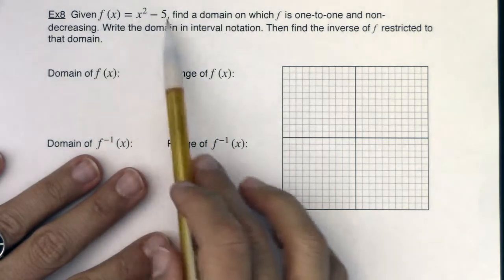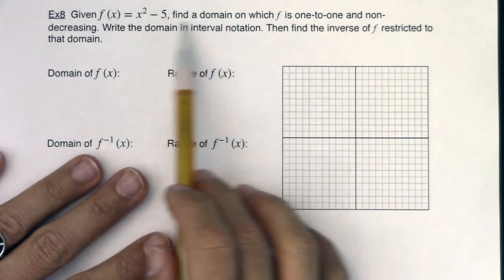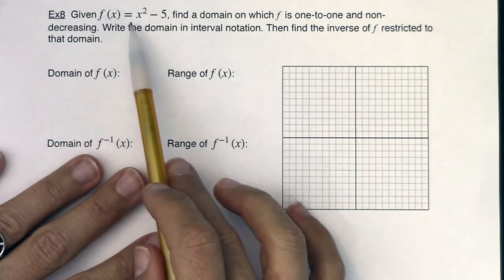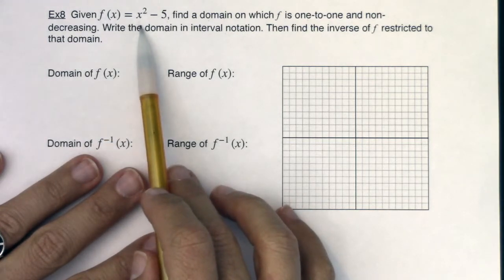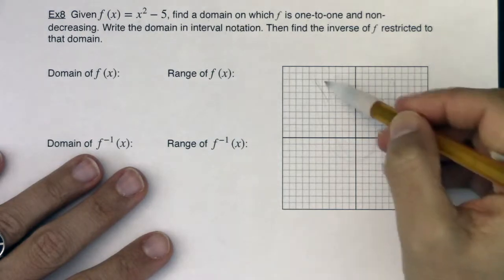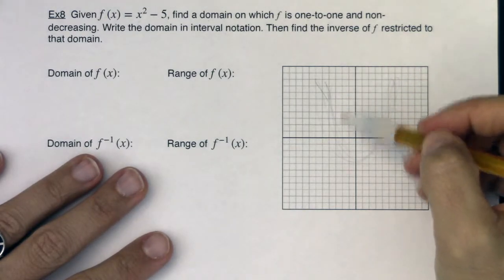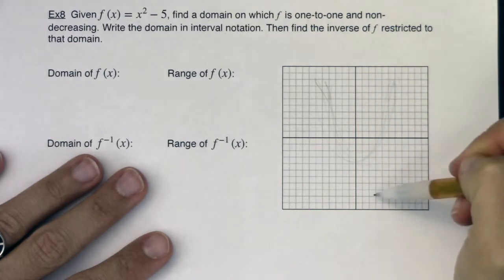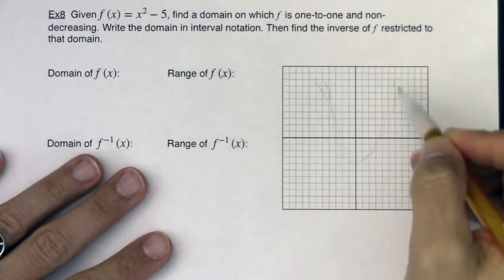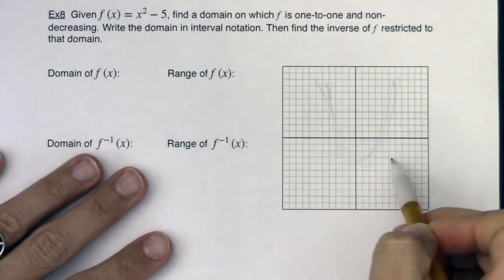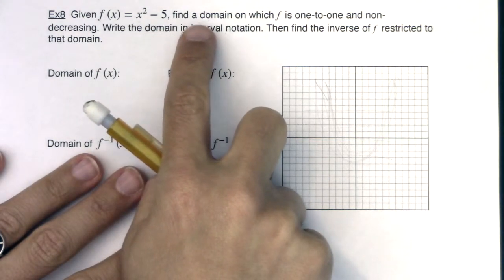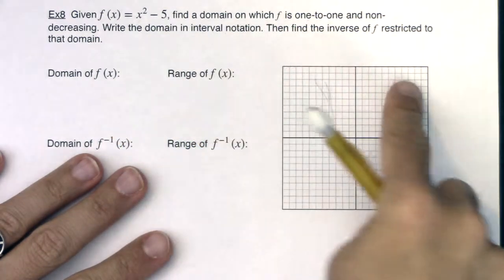We've got a lot to do, so let's unpack this one piece at a time. Find a domain on which f is one-to-one and non-decreasing. I want you to graph x² - 5 in your mind's eye. I'm hoping you're thinking of a parabola. All parabolas pass the vertical line test. They're definitely functions with no domain restrictions - no fraction, no radical, no logarithm. They pass the vertical line test but fail the horizontal line test.